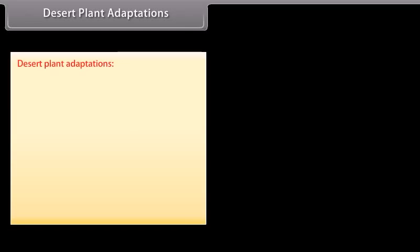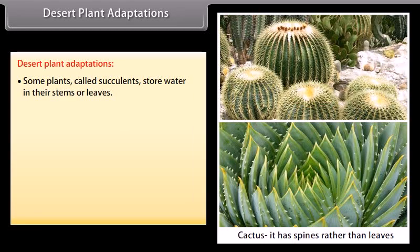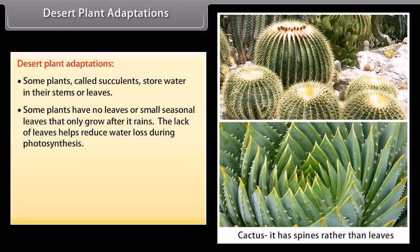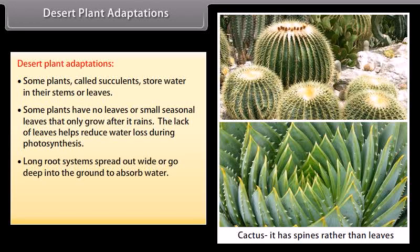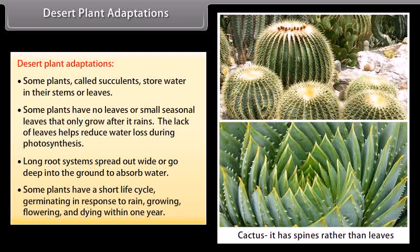Desert plant adaptations: some plants called succulents store water in their stems or leaves. Some plants have no leaves or small seasonal leaves that only grow after it rains, reducing water loss during photosynthesis. Long root systems spread out wide or go deep into the ground to absorb water. Some plants have a short life cycle, germinating in response to rain, growing, flowering, and dying within one year.